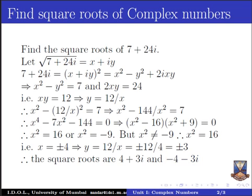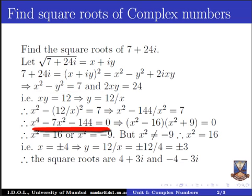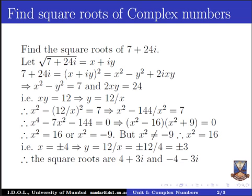To summarize the method: whenever we have to find the square roots of a complex number, the first step is to assume the square root equals x plus iy. Second, square both sides and equate real parts with real parts and imaginary parts with imaginary parts. Then substitute one variable in terms of the other into one of the equations to get a quadratic equation in x square or y square. Factorize it — one factor will give a negative square term which we discard. Taking square roots of the remaining factor gives two values, and combining them we obtain both square roots: x plus iy and minus x minus iy.